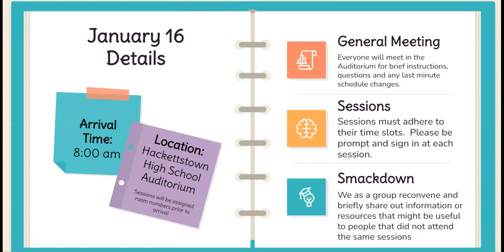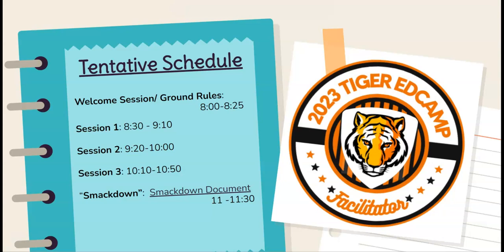There's also something called the smackdown. Basically what the smackdown is: you reconvene as a group at the end and share out anything you think might be really beneficial for colleagues who didn't have the opportunity to go to your session, or if there were resources you found helpful — it's a big collaborative sharing opportunity. Here's the tentative layout of the day: you arrive in the auditorium by 8:00 to 8:25. Session one is from 8:30 to 9:10 — 40 minutes — and then there's a 10-minute movement time between each session. We end the day with the smackdown document and the smackdown in the auditorium.